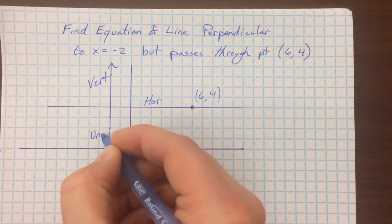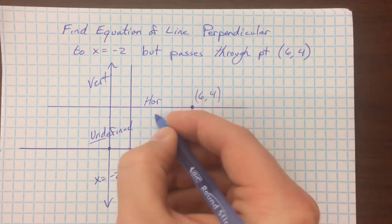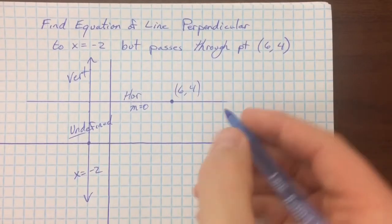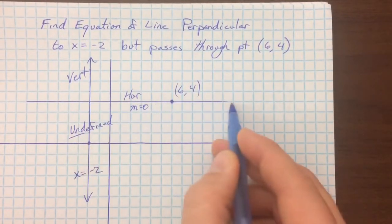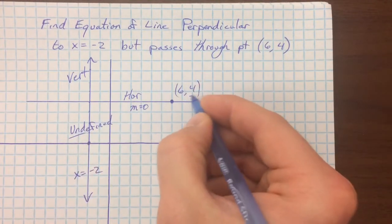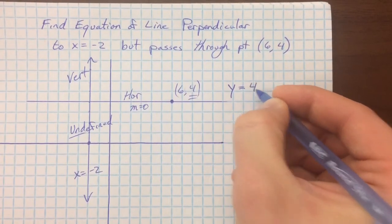Vertical line has an undefined slope. Horizontal line has a slope of 0. So, you can write it in y equals mx plus b, but it's a lot easier just to say, okay, well, all the y values here have the same y value, and that y value is 4. And so I can write the equation of the line as y equals 4.